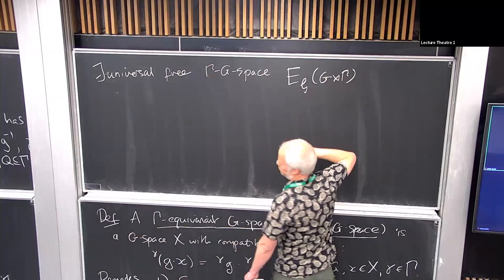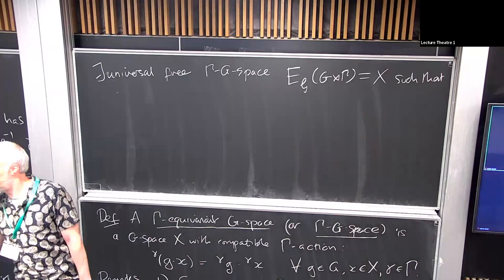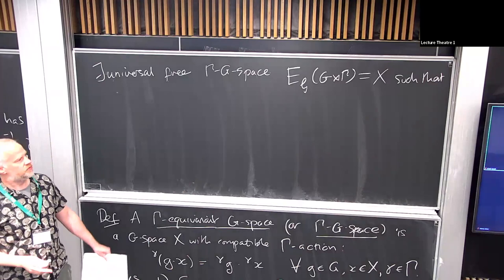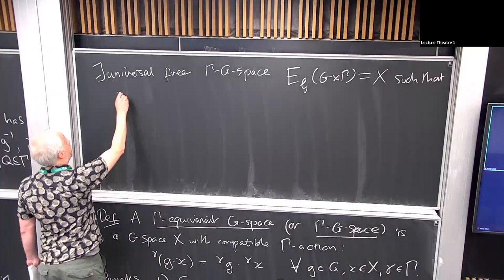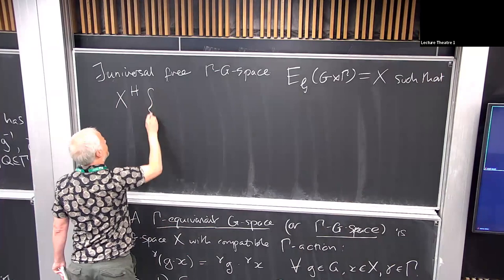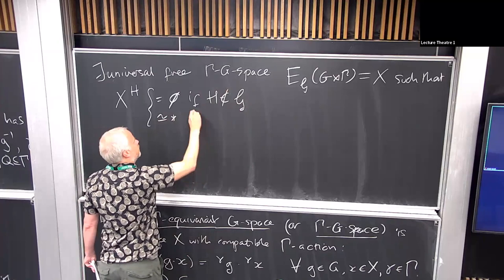Essentially the family generated by the gamma, which is the base of the semi-direct product. So that is all subgroups of the semi-direct product which are conjugate to a subgroup of gamma. H is G Q G inverse for some G in G and Q subgroup of gamma. So now this whole theory of classifying spaces for groups with respect to families of subgroups. And so I know that there exists a universal free gamma G space E curly G, which is a bit of a mouthful to write. So I'll just call it X.